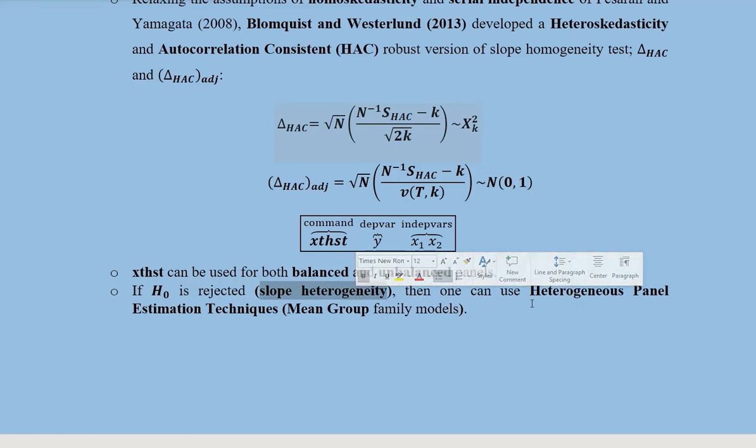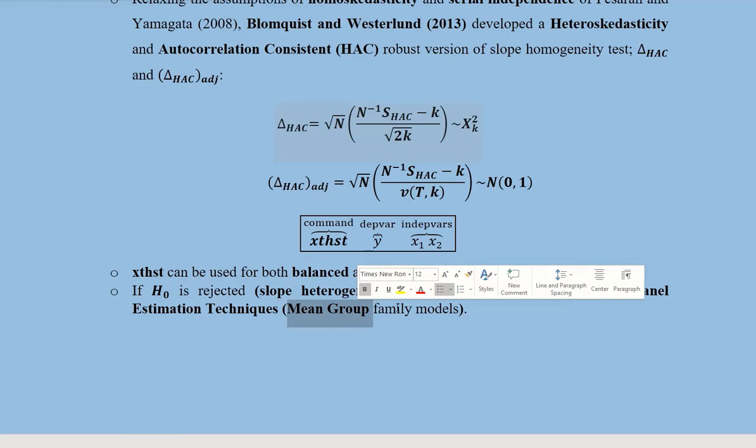And that leads us to the outcome. That outcome is that we can use the heterogeneous panel estimation techniques, which are mean group family models. For example, pooled mean group PMG. Now we will see an empirical example of it.